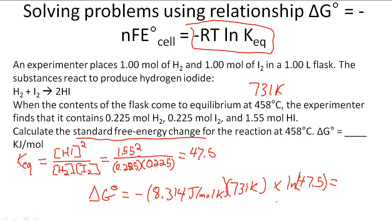When we calculate it, we get negative 23,500 joules per mole, or to make it simpler, negative 23.5 kilojoules per mole. That is our answer: negative 23.5 kilojoules per mole.